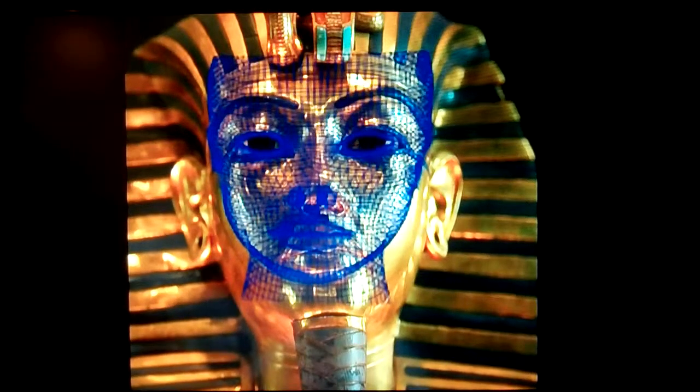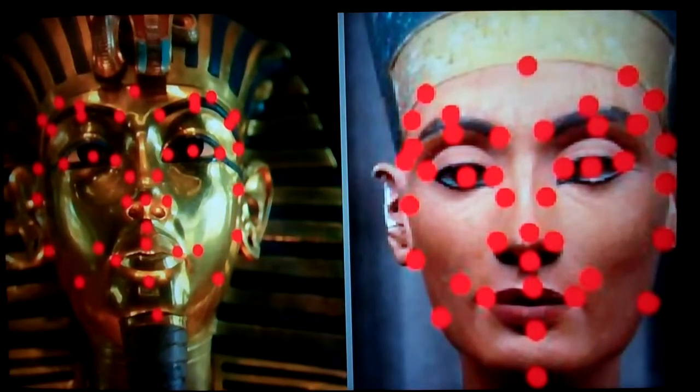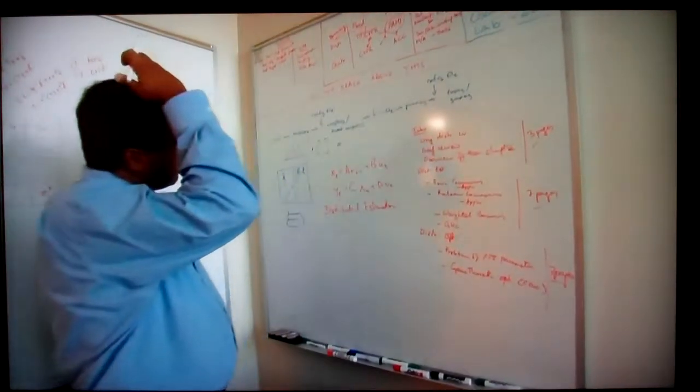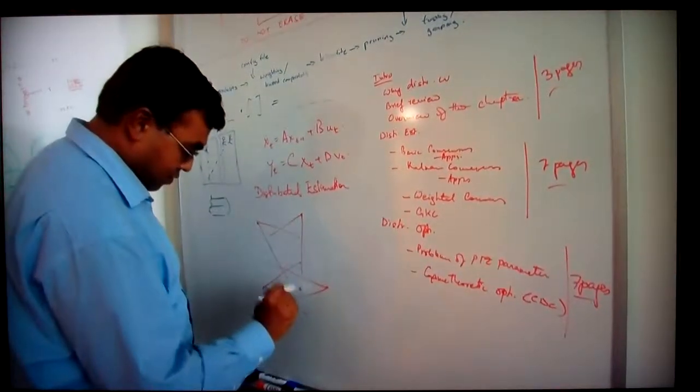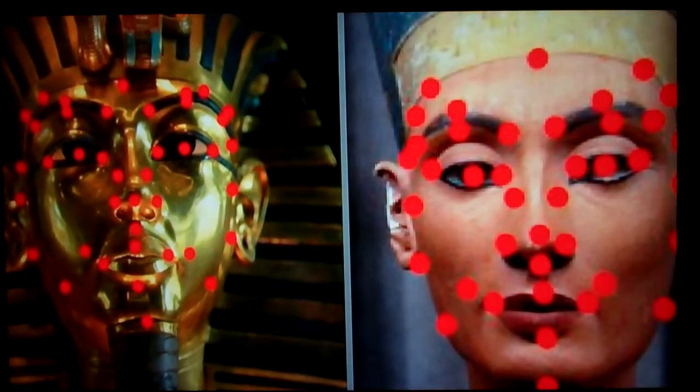The process is repeated with the Tutankhamun death mask. Now Professor Roy Chowdhury has a unique pattern for both faces. The purpose is to come up with an objective measure and a number — a number that cannot be obtained just by staring at those faces. By doing this process of coming up with a signature, you arrive at a number. The distances between the signature points are tiny, ranging from two to four millimeters, because essentially most faces are similar. For the computer, these differences are statistically significant.